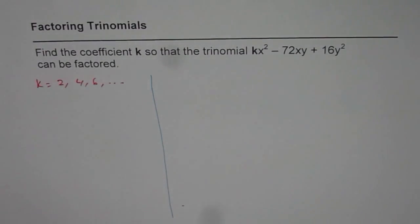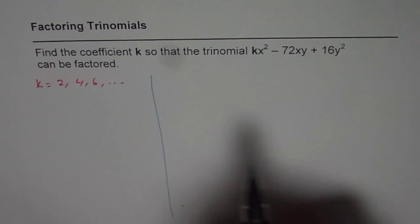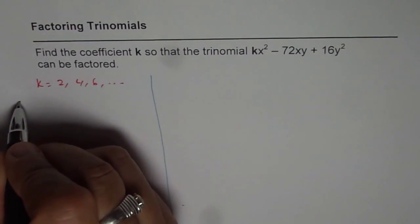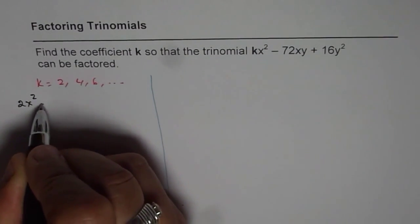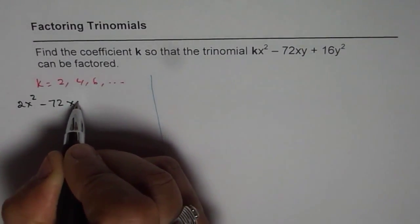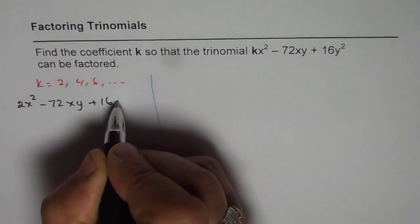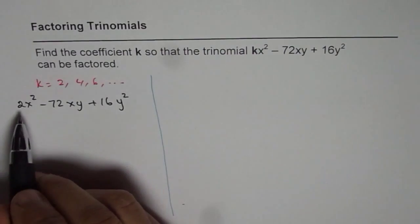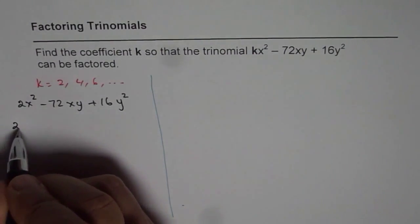Well, in that case, I can write the equation as 2x² - 72xy + 16y² and I can always factor 2. So that's called group factoring, perfect.